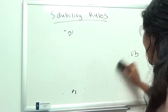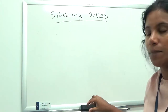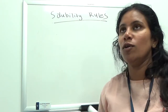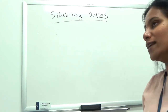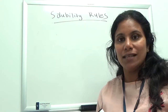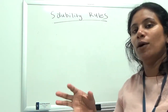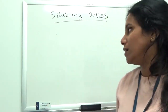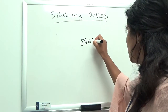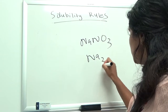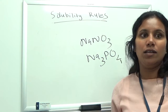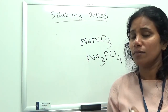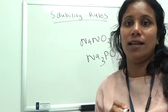Now looking at cations: if your cation is in Group 1 — lithium, sodium, potassium, rubidium, or cesium — then regardless of the anion, your compound is soluble. For example, sodium nitrate or sodium phosphate are both soluble simply because they contain sodium. Anything with a Group 1 cation is soluble.